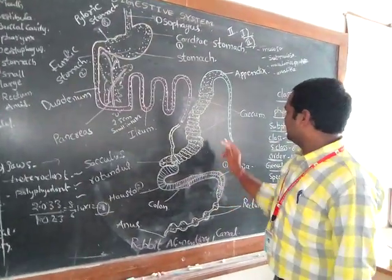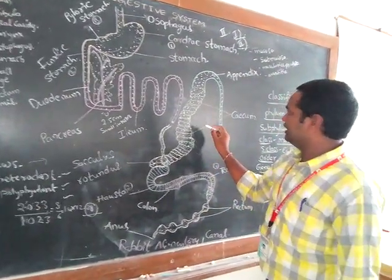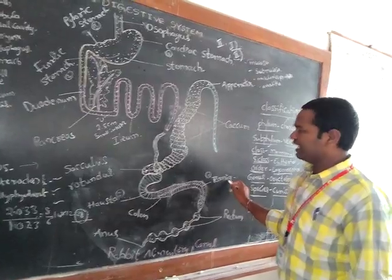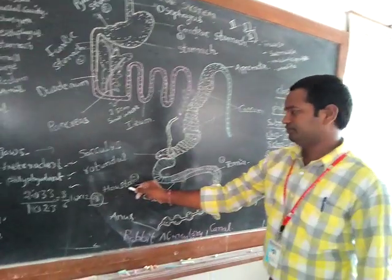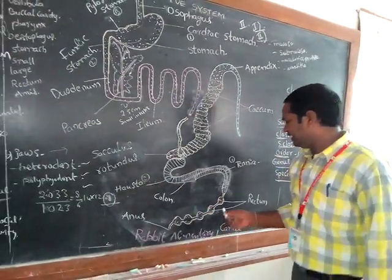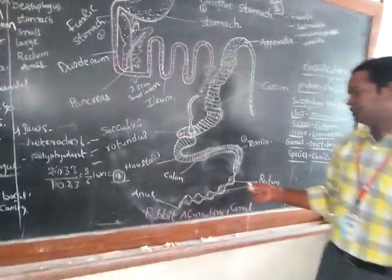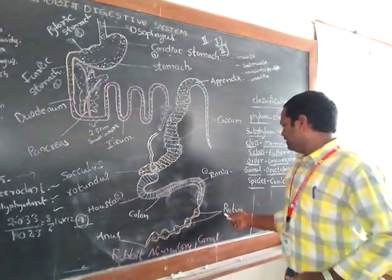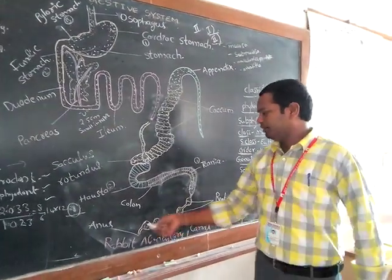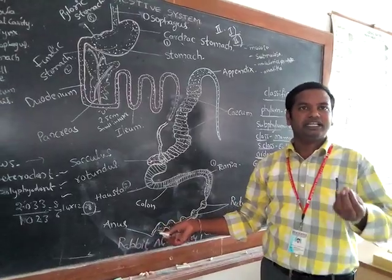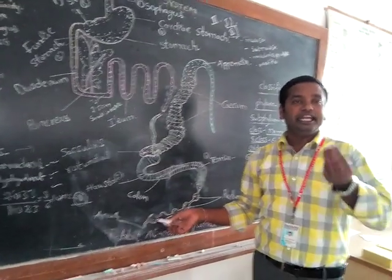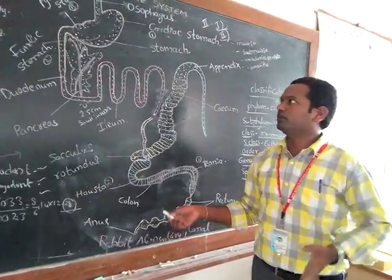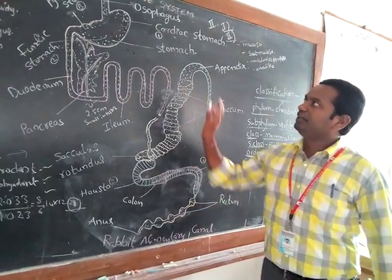After that, the large intestine. The large intestine has two parts: the caecum and the colon. Finally, waste material is released from the body through the rectum and anus. The anus is the end part — the posterior part — of the alimentary canal.